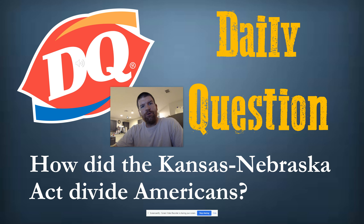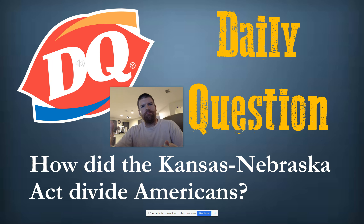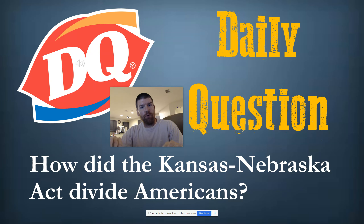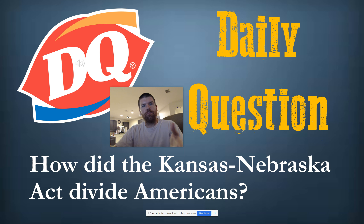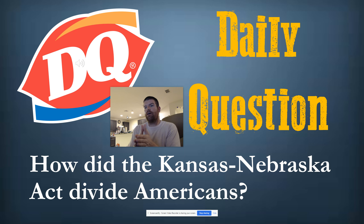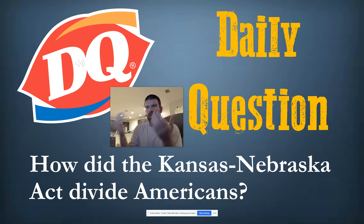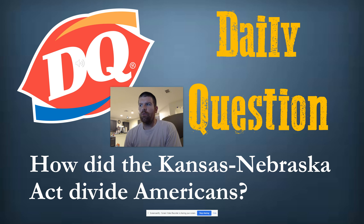So yesterday — or whenever you guys did it — we learned about basically the major players involved in how the United States is going to get broken apart right before the Civil War. Today we're going to figure out one of those other pieces that will help figure out how exactly this country is going to get pulled apart, and the Kansas-Nebraska Act is going to be one of those things.